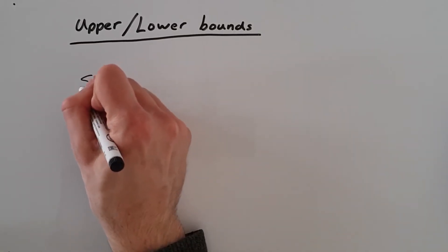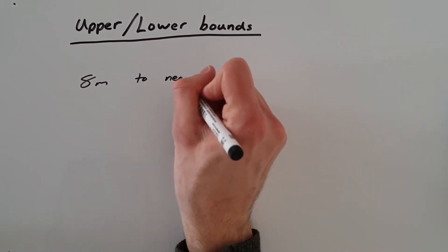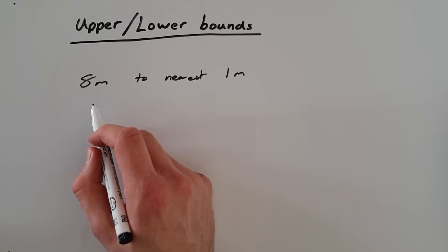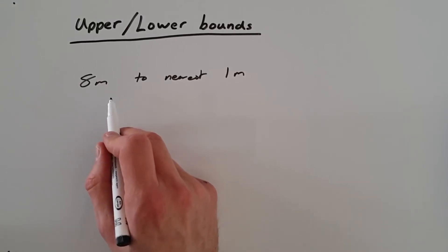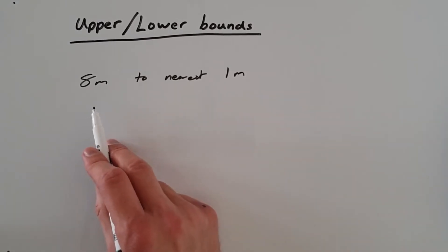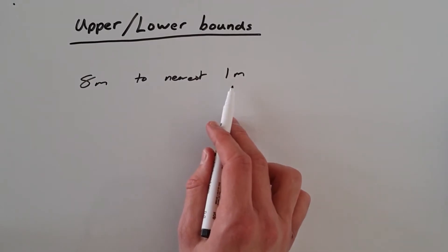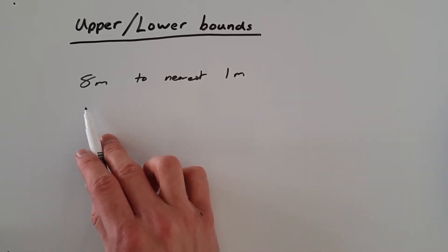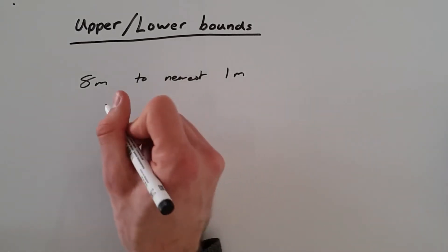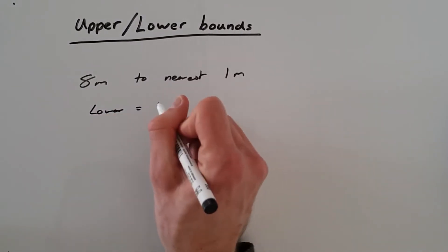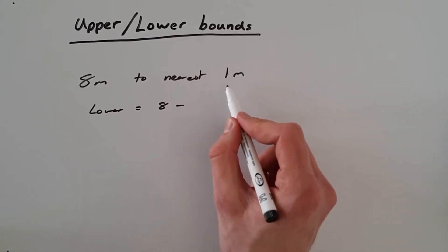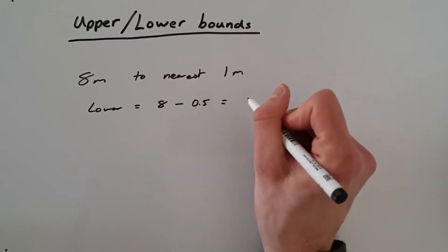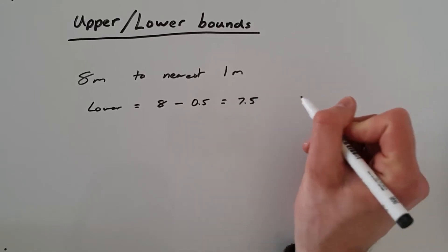So if we had, for example, eight meters to the nearest one meter, we want to work out the upper and lower bounds. The quickest way to calculate this is to look at what degree we're rounding to — the nearest one meter — and then plus and minus half of that onto our value. So the lower bound would be eight minus half of one, which is 0.5, giving us 7.5 meters.